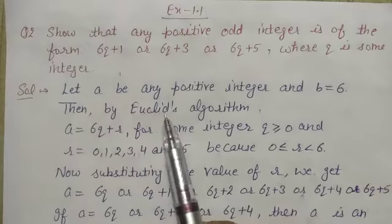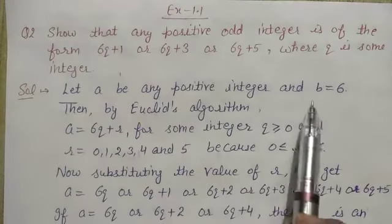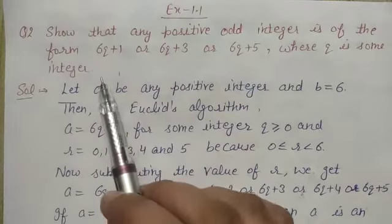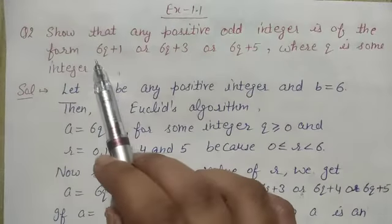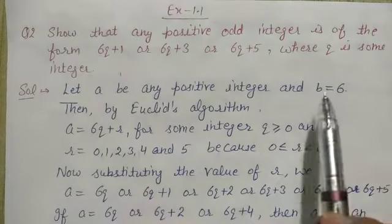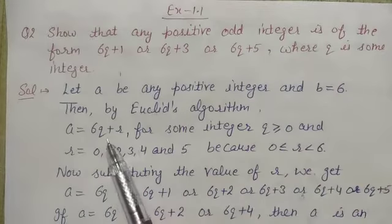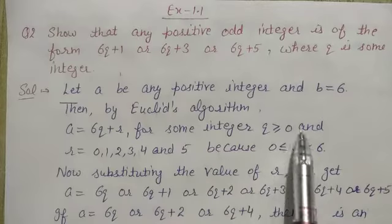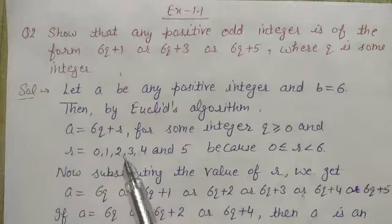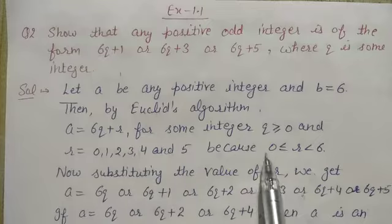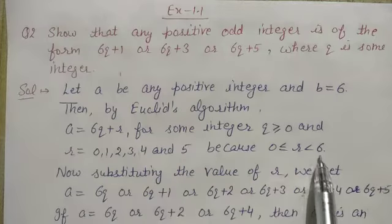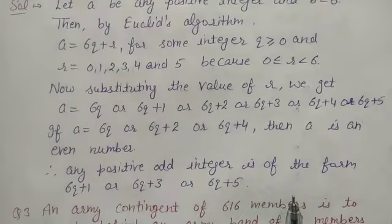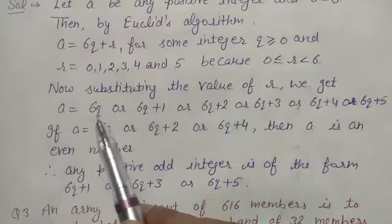So let a be any positive integer and b equals to 6. According to Euclid's lemma, we have a equals to bq plus r. By Euclid's algorithm, a equals to 6q plus r for some integer q greater than or equal to 0, and remainder r equals 0, 1, 2, 3, 4, or 5, because 0 less than or equal to r less than 6.